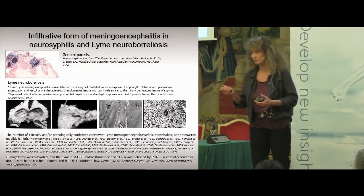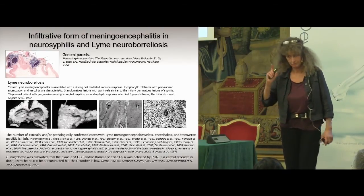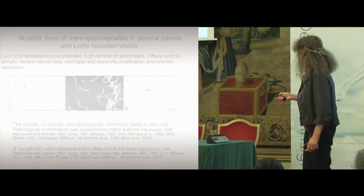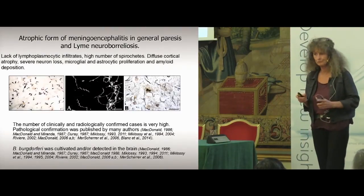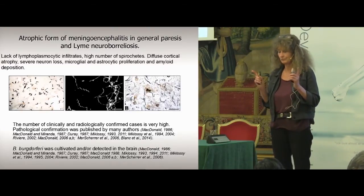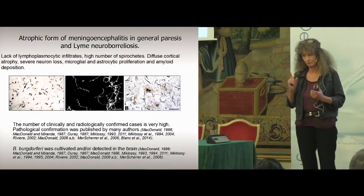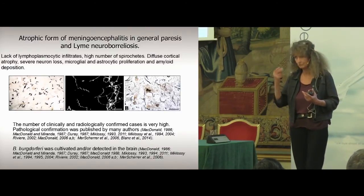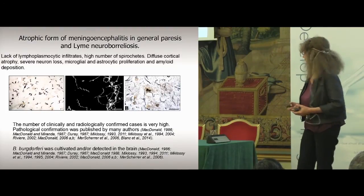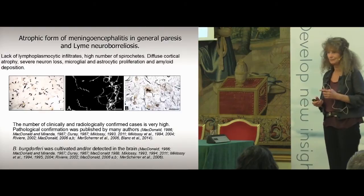Alan has also mentioned the granulomatous reaction that we can have, which corresponds completely. Now, the second form of the meningoencephalitic form is the atrophic form, in which we have no lymphoplasmocytic infiltration. The big difference between these two forms is that in the first one, where we have very strong lymphoplasmocytic infiltration, we have very few spirochetes, because the inflammation is there to take them out. However, in the atrophic form, there is no lymphoplasmocytic infiltration, but we have a lot of spirochetes, and the number of spirochetes can be extremely high.